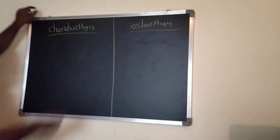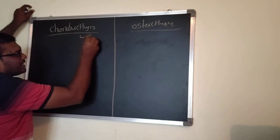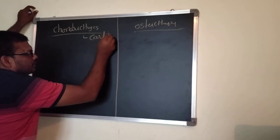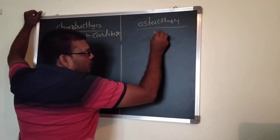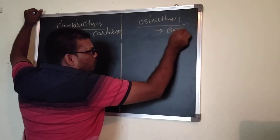For Chondrichthyes, the endoskeleton is cartilaginous type. For Osteichthyes, the endoskeleton is bony type.